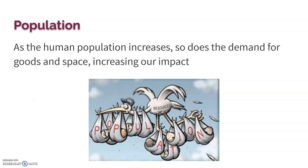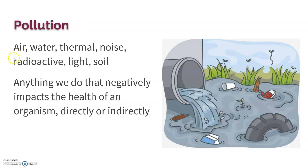As human population increases, our demand for resources grows, so our impact on the environment increases — we take up more space, need more food, and produce more pollution. Pollution includes air, water, thermal, noise, radioactive, light, soil, and visual pollution. Anything that negatively impacts the health of an organism directly or indirectly counts — whether it affects their food source, their habitat, or their ability to hunt.